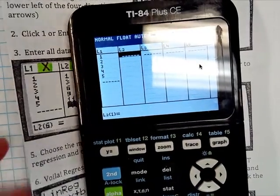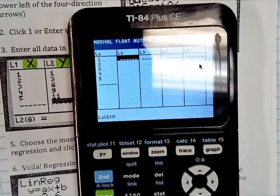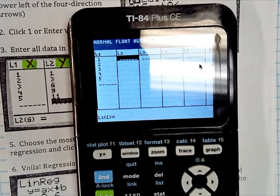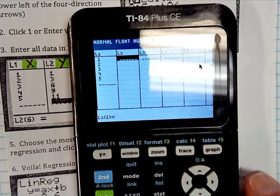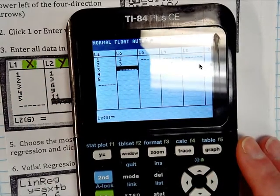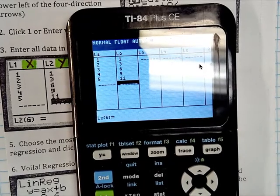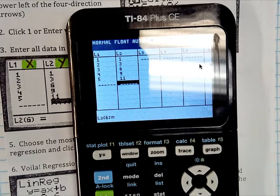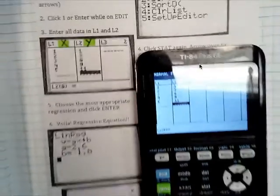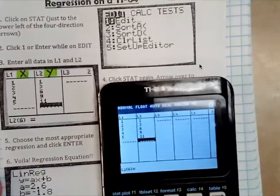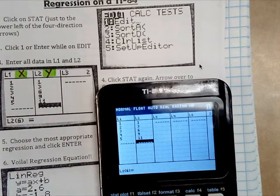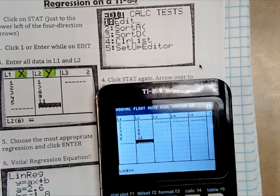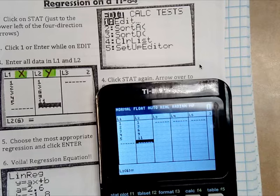So you push enter between each number. L2, you're going to put your Y values. So 1, 3, 6, 9, 11. Once you have them in L1 and L2, show the people at your table. Make sure everybody has that done. Make sure everybody has it on L1 and L2.